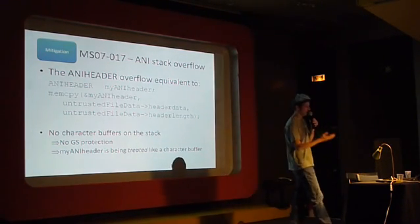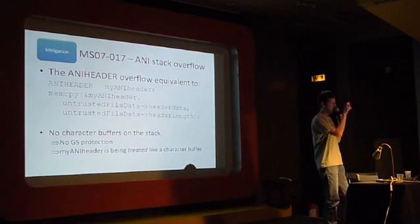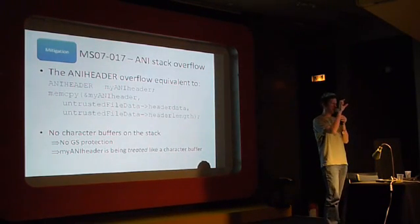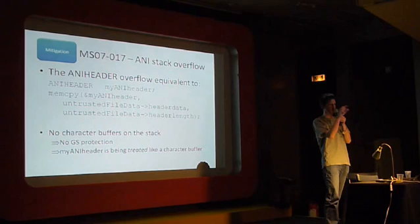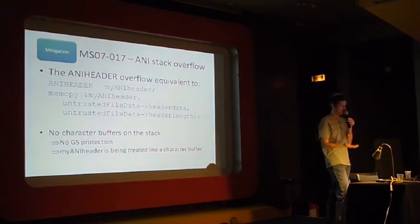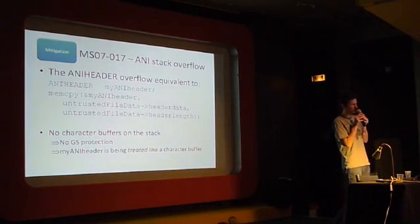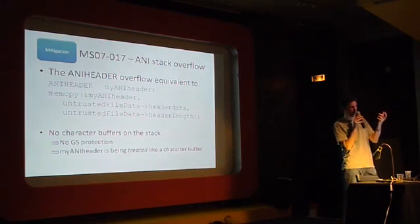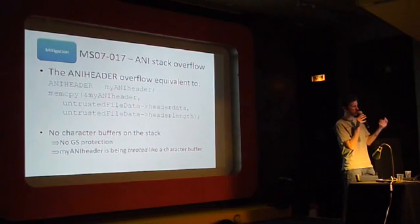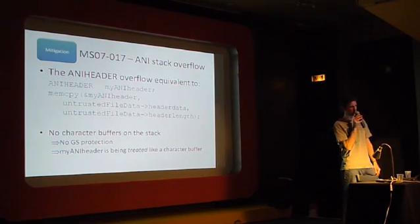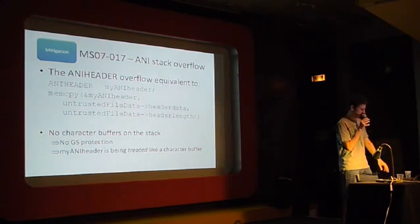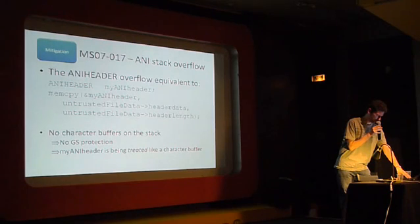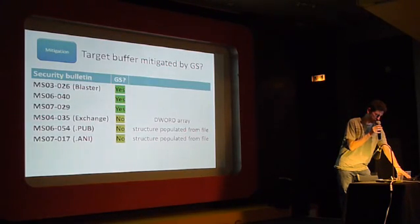Clearly the issue there is that even though that ANI header struct is not a string, and strings are not being copied around, in practice any buffer — anything that's been passed into memcpy — is potentially vulnerable to being overflowed. It's been treated like a buffer, and GS should maybe do likewise.